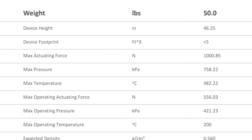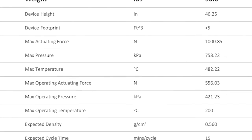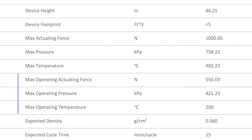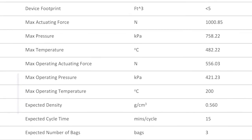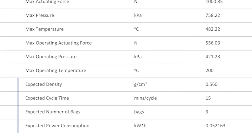The operating specs consist of the max actuating force which is limited to 556 newtons, the operating pressure which is limited to 421 kilopascals, and the maximum operating temperature which is limited to 200 degrees celsius. Looking at the performance category, the expected density is seen to be 0.56 grams per centimeter cubed. The expected cycle time is 15 minutes. The expected number of bags this machine can hold is 4 while the expected power consumption is 0.05 kilowatt hours.